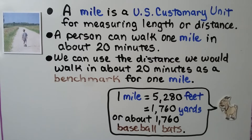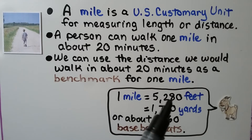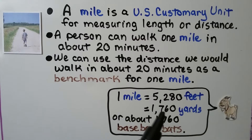A mile is a U.S. customary unit for measuring length or distance. A person can walk about one mile in 20 minutes, so we can use the distance walked in about 20 minutes as a benchmark for one mile. One mile is actually equal to 5,280 feet, equal to 1,760 yards, and since a baseball bat is about a yard, it's equal to about 1,760 baseball bats.